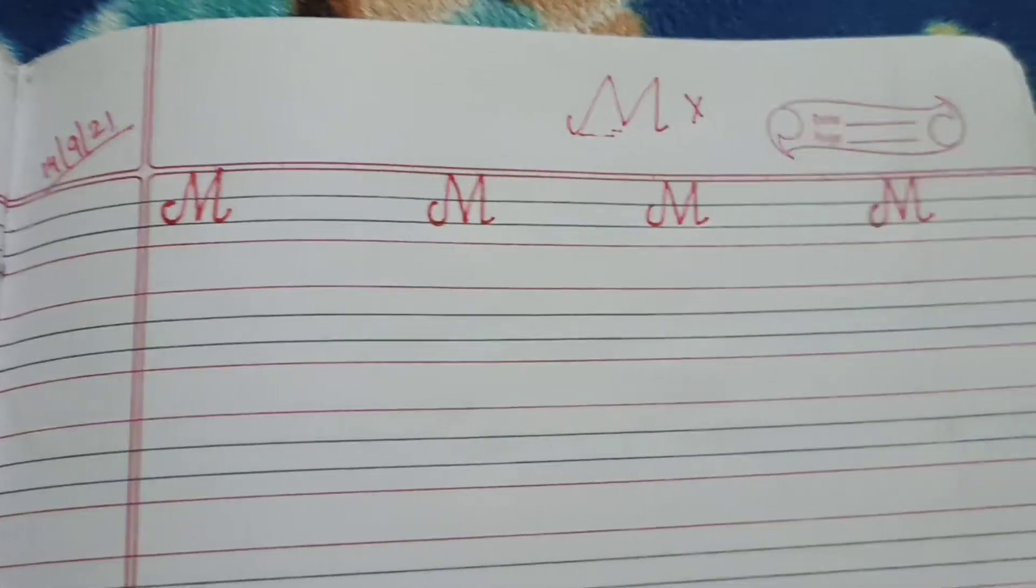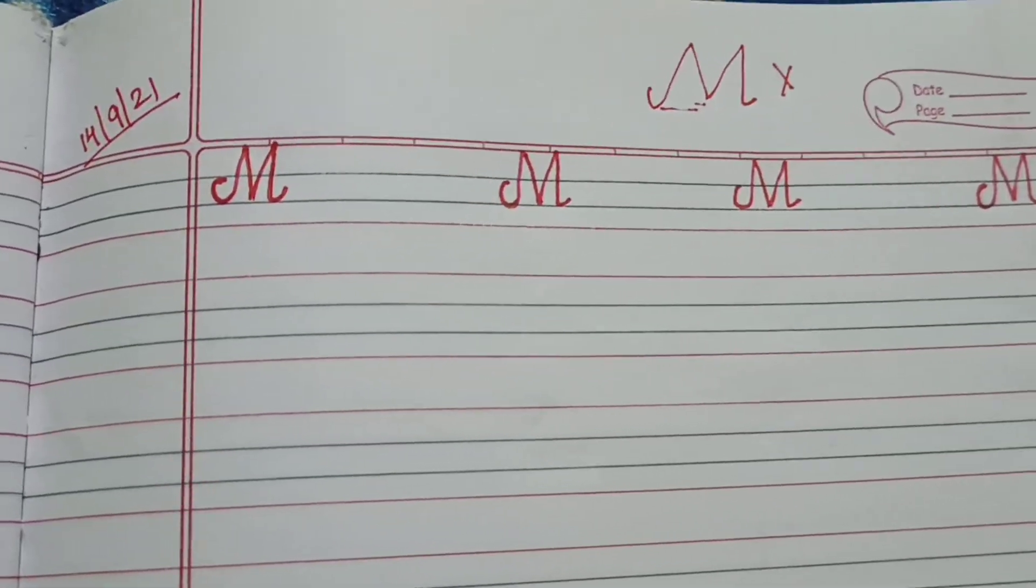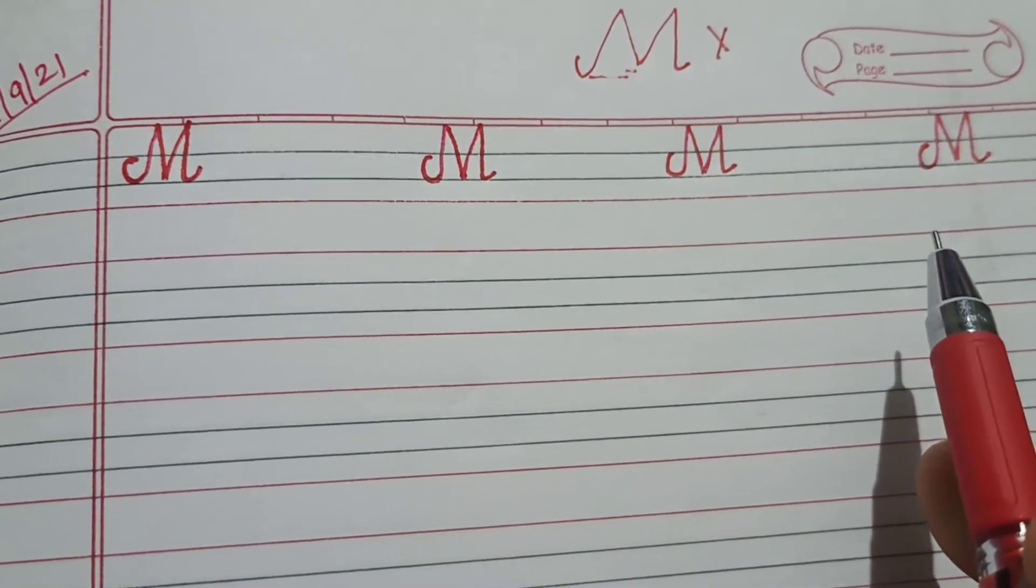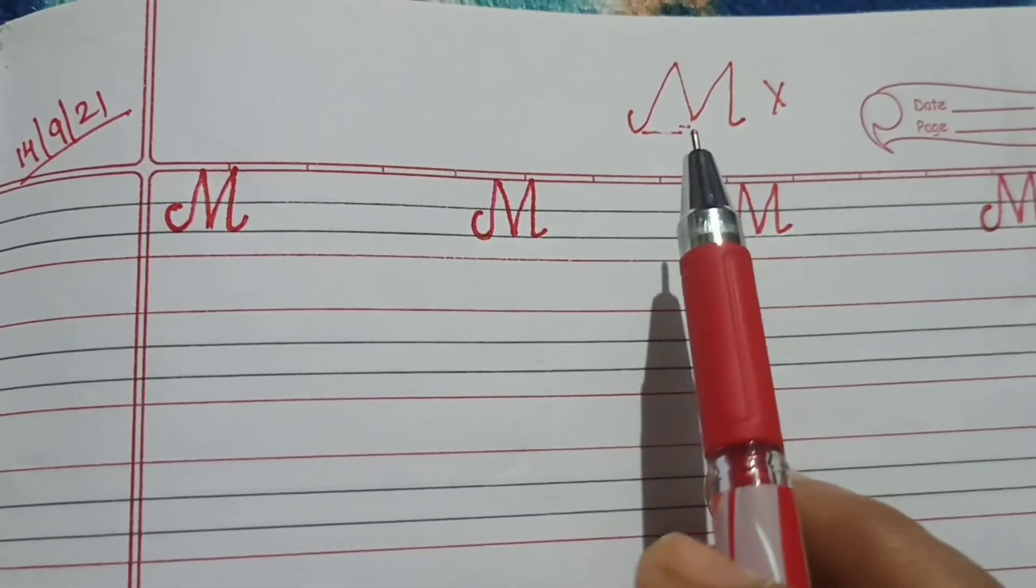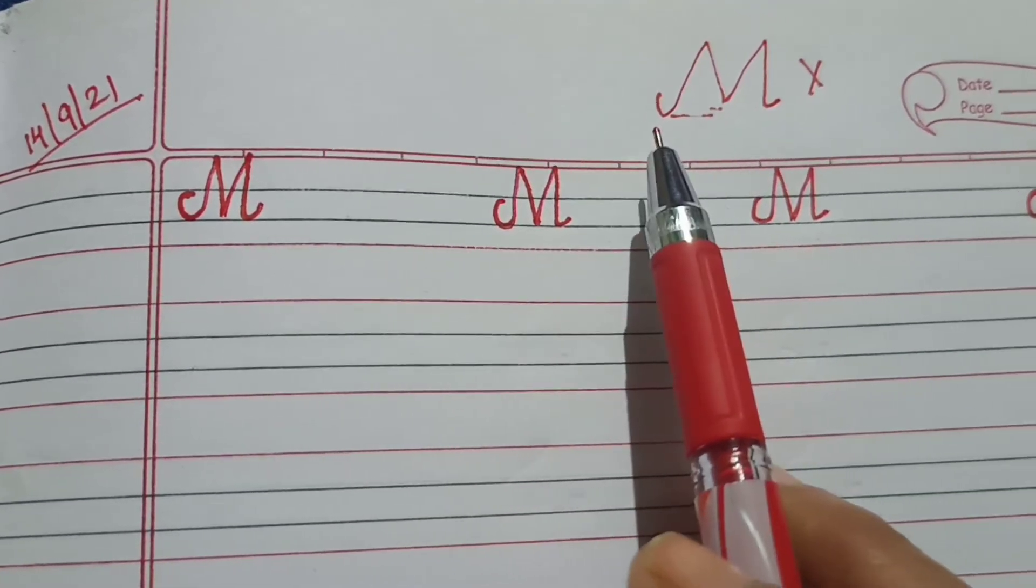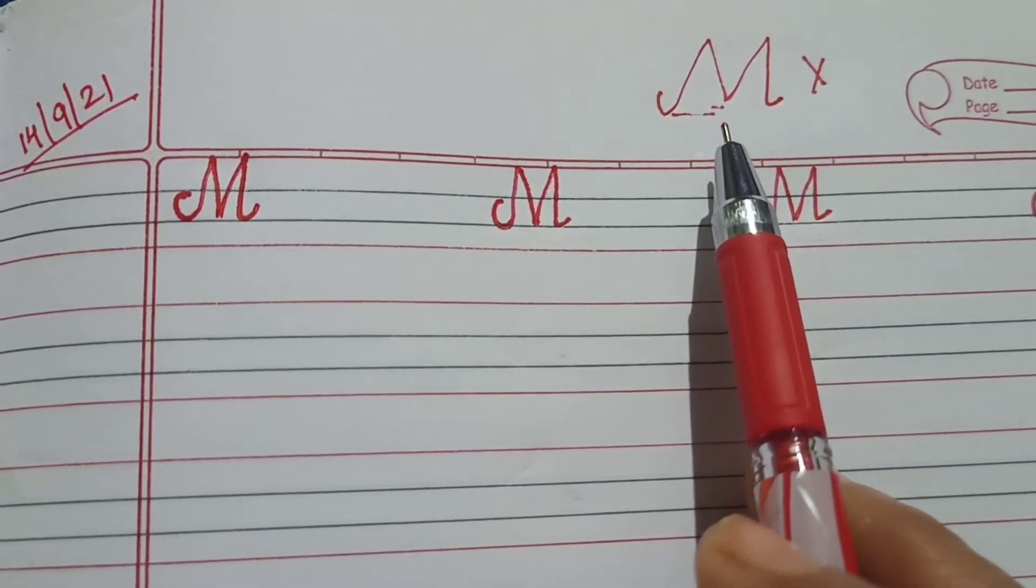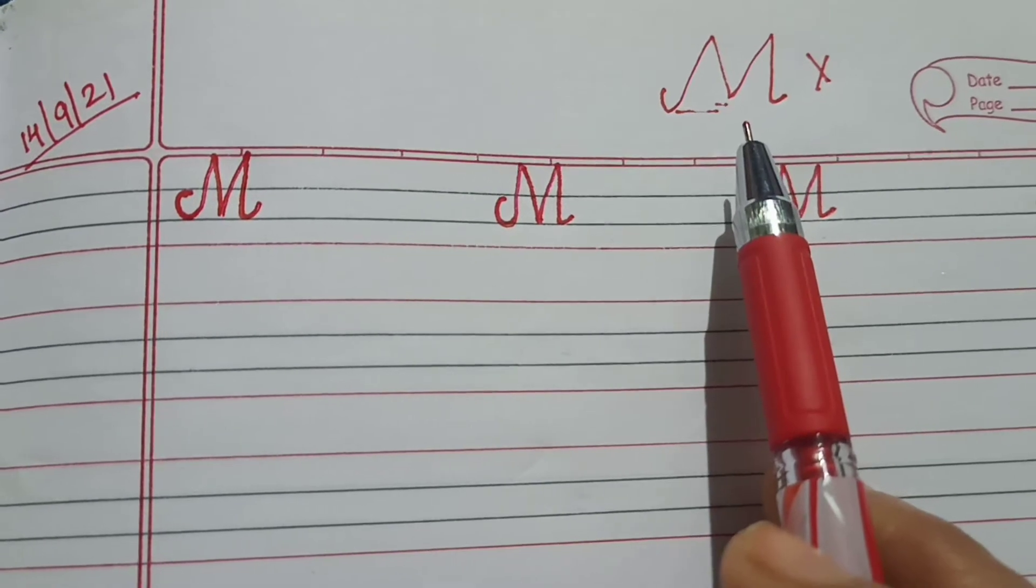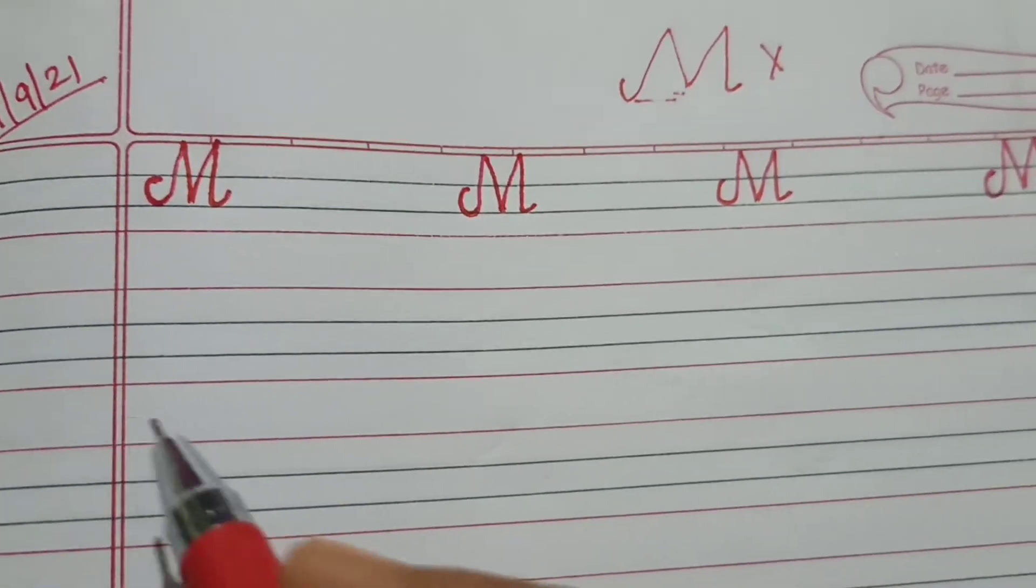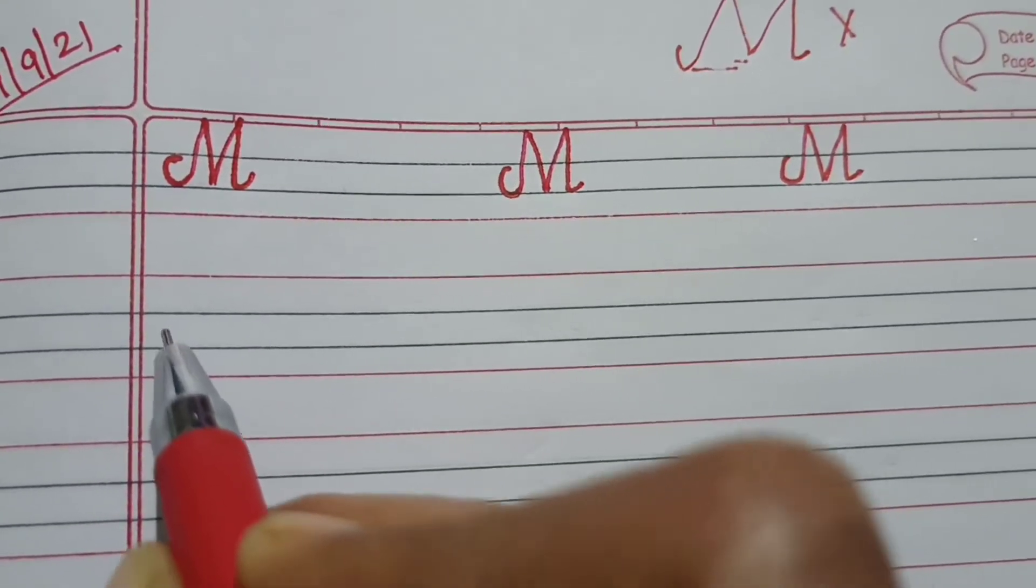Now, today let us write M. So, this is M. First we will put the date and here I have written it once. So, see that when you are writing it, don't write like this. If you write far, it looks very odd. Okay. So, here you can see how I am writing. Let us start writing children. It's very easy.